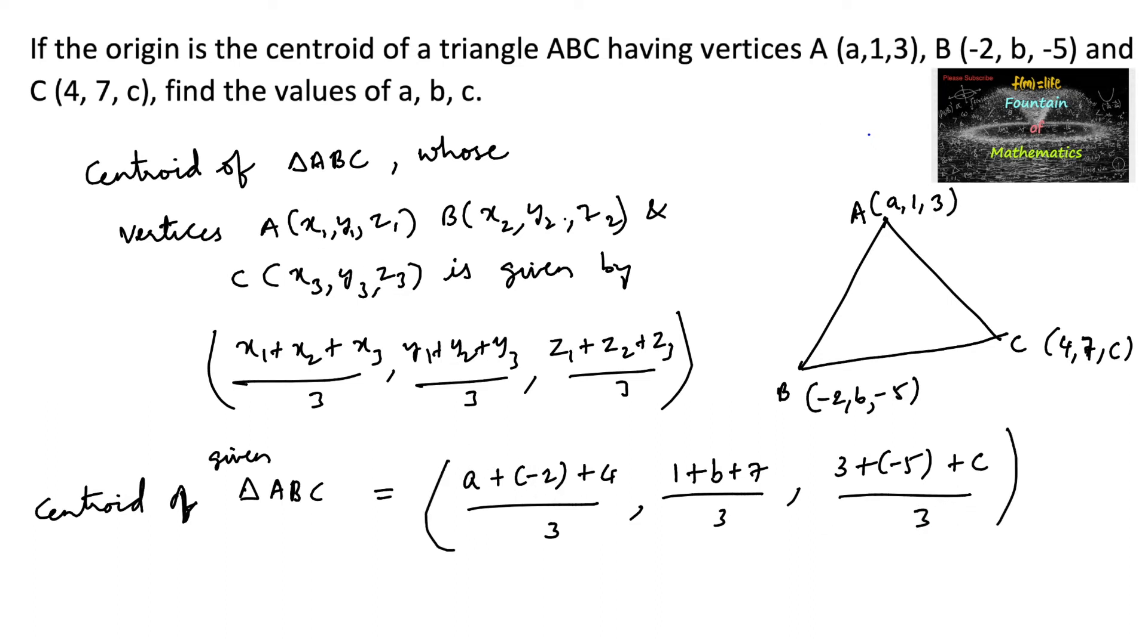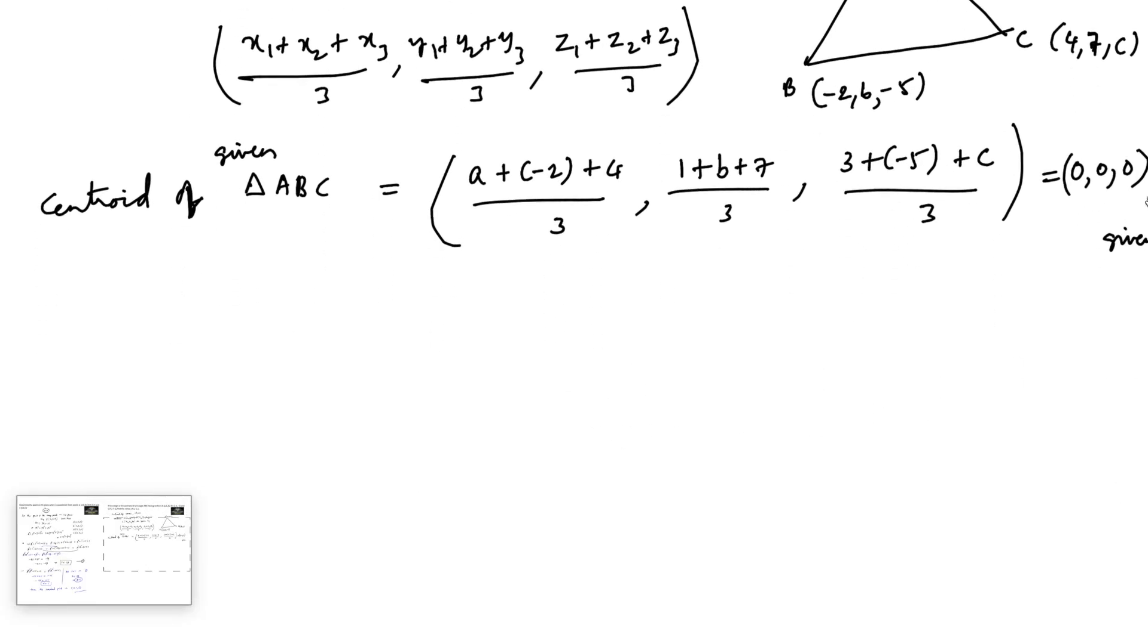and which is given in the problem: origin is the centroid, (0, 0, 0), which is given in the question. So we can consider if two ordered triads are equal, the corresponding elements are equal.